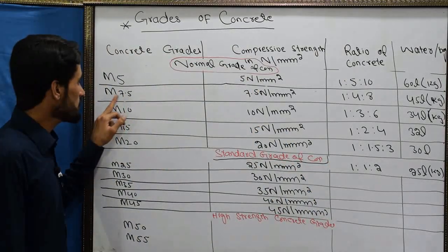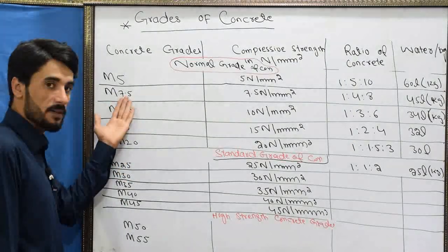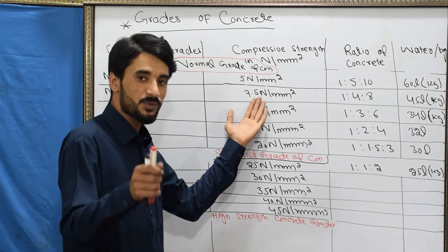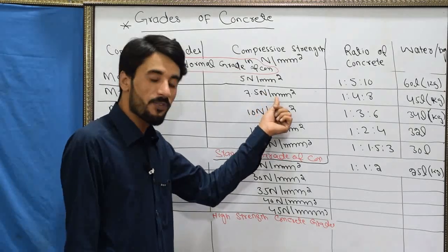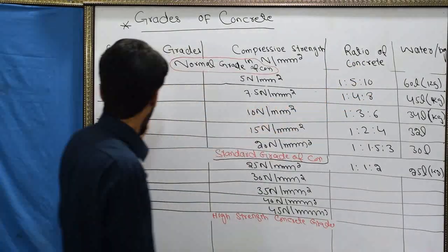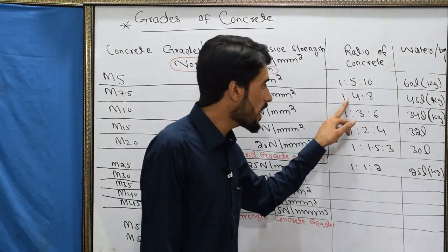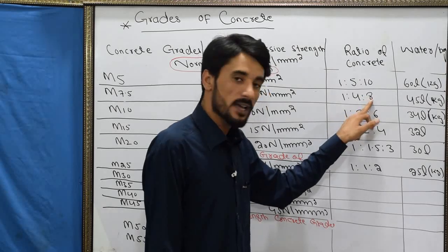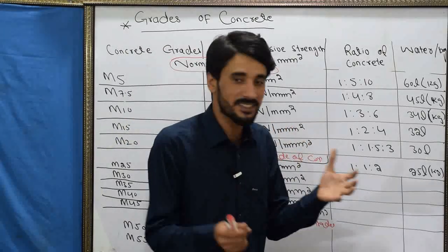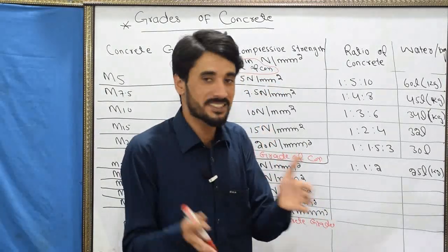Similarly, for M7.5: M represents mix, and 7.5 is the minimum compressive strength in Newton per millimeter square after 28 days. The ratio between the ingredients of M7.5 grade concrete is 1:4:8. The water required for M7.5 grade concrete is 45 liters or 45 kg per bag.